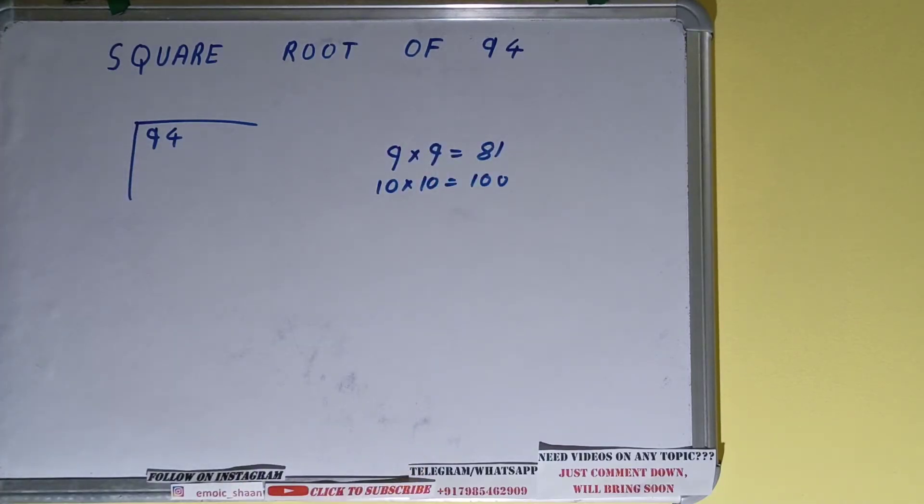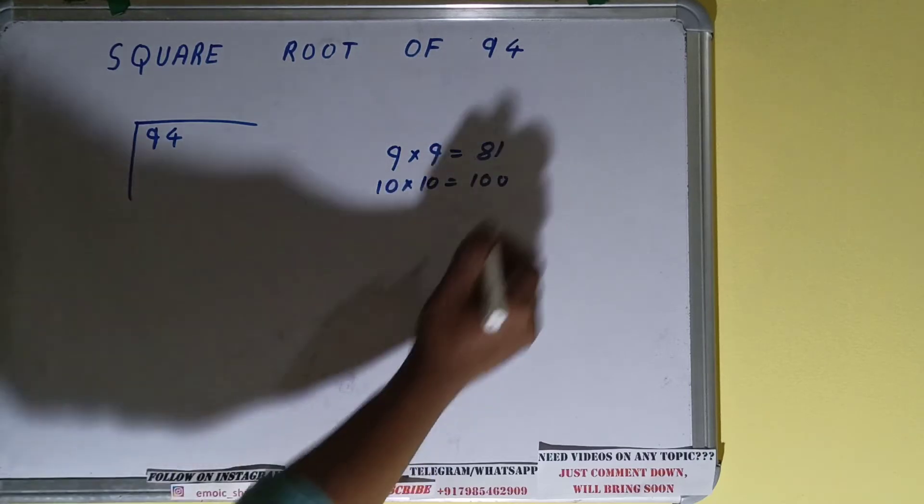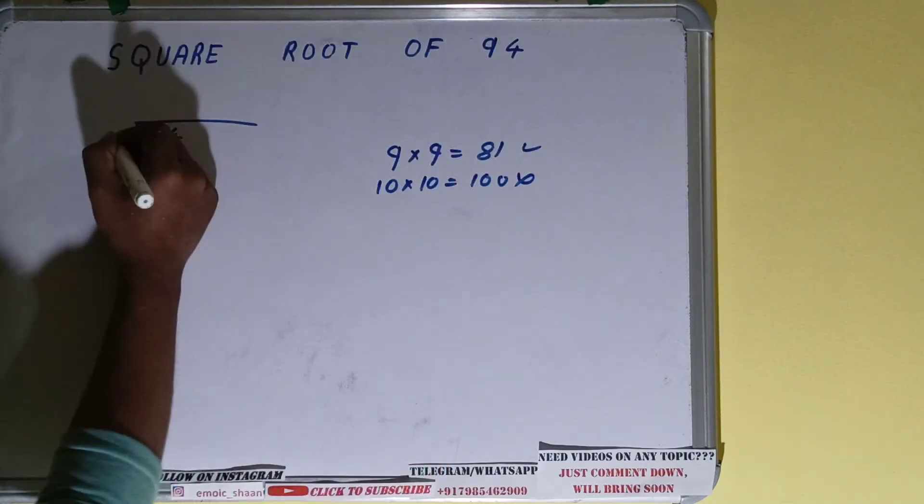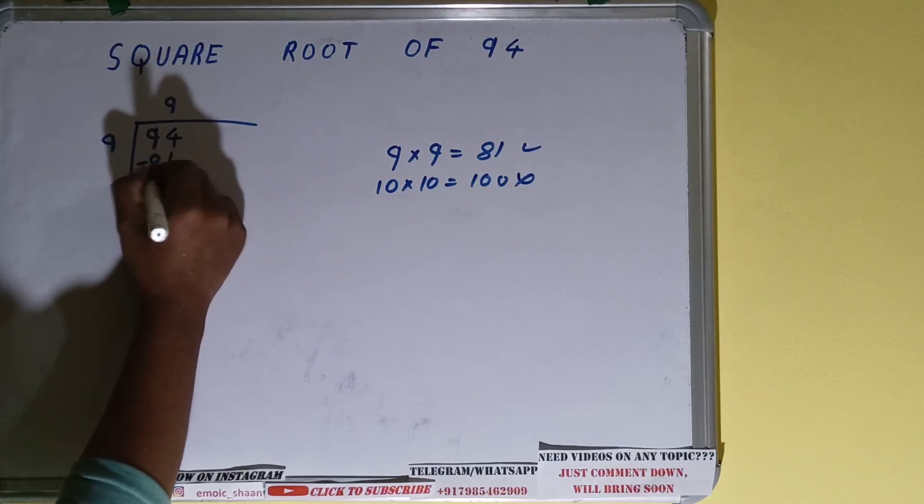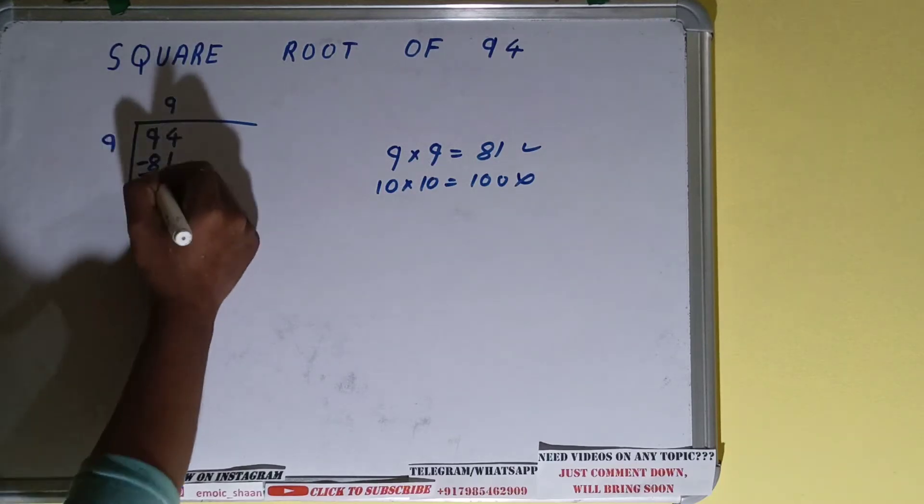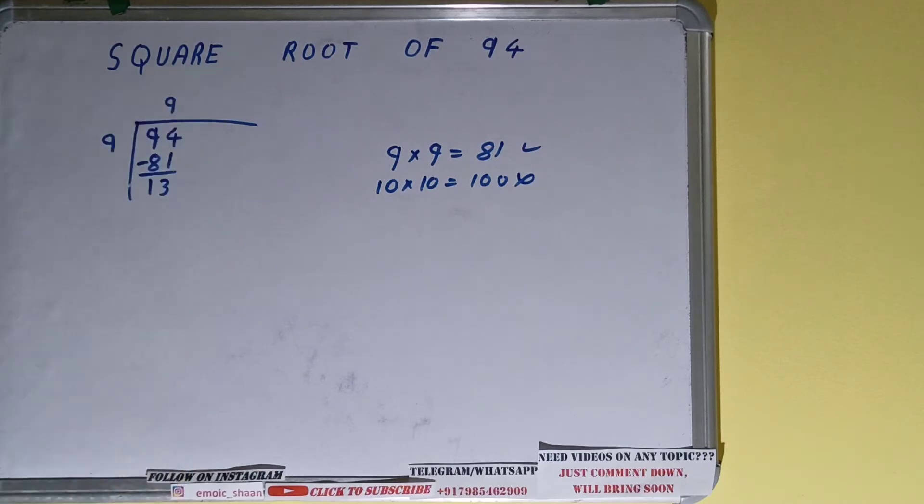So we have to take this 9. So 9 here and 9 here which will give 81. Subtract it and you'll be left with 13, right.